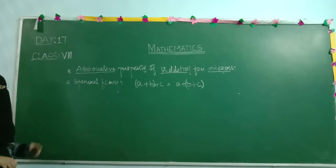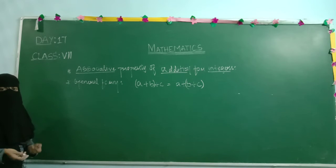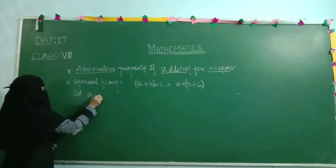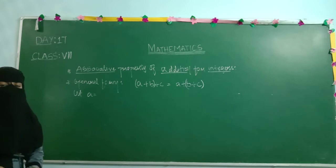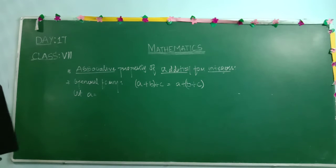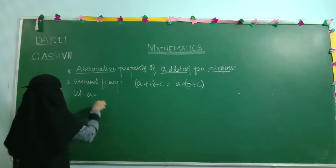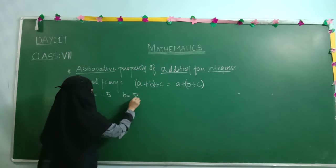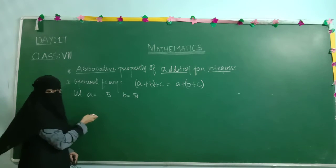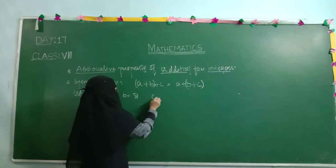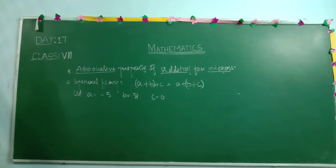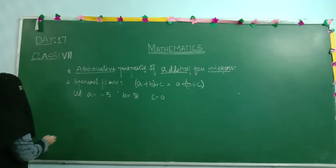Now I will take my own integers and substitute. At home, try with your own integers. Integers include positive numbers, negative numbers, and zero. So let: A equals minus 5, B equals 8, and C equals 0. All these values belong to the set of integers.